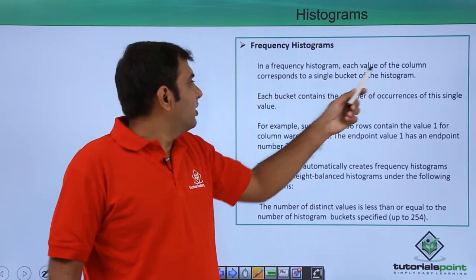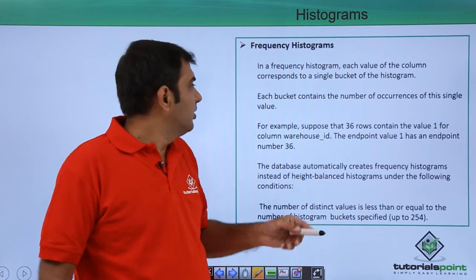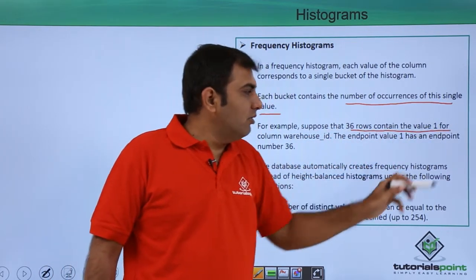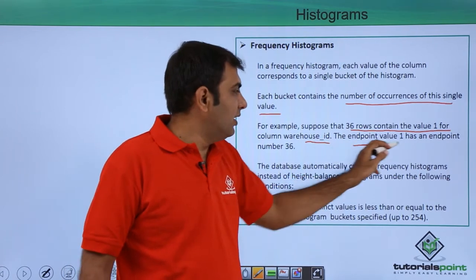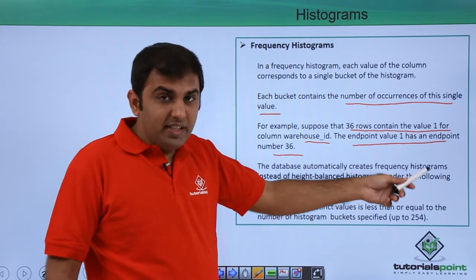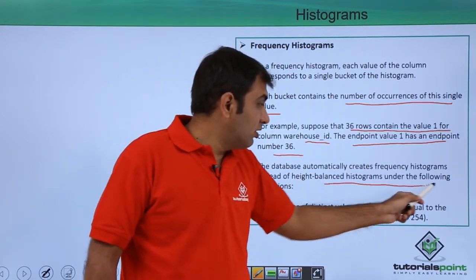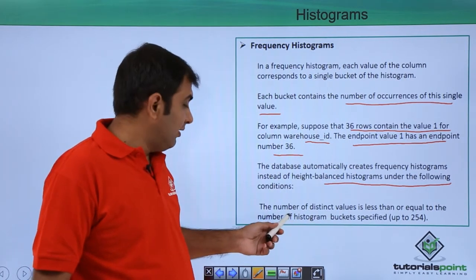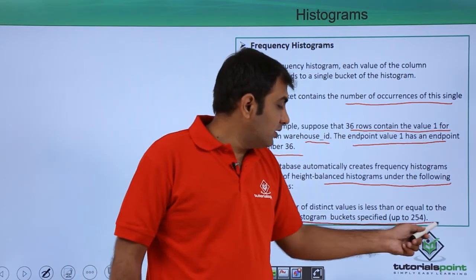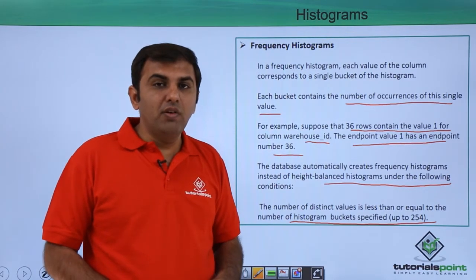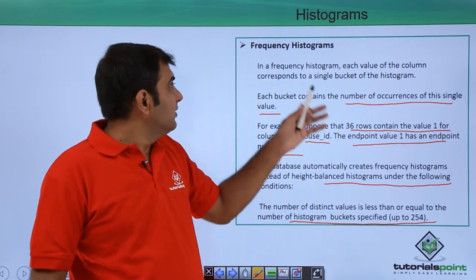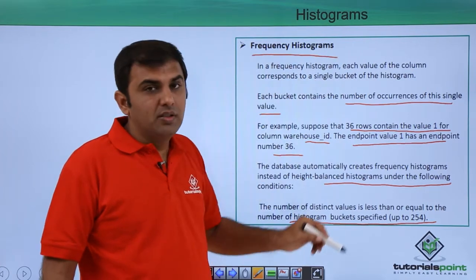In the frequency histogram, each value of the column corresponds to a single bucket of the histogram. Each bucket contains the number of occurrences for that value. For example, suppose 36 rows contain the value 1 for the warehouse_id column - the endpoint value 1 has an endpoint number of 36. The database automatically creates a frequency histogram instead of a height-balanced histogram when the number of distinct values is less than or equal to the number of histogram buckets, which is up to 254 by default.